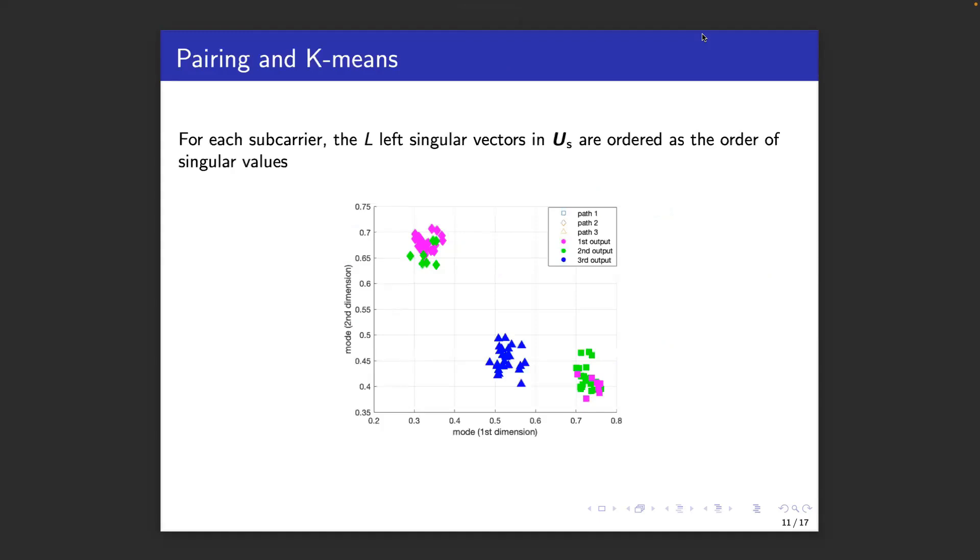This figure visualizes what happens across the subcarrier when we apply 2D Esprit. This is a scenario with three paths. The two axes in the figure show the angle of arrival and angle of departure, and the different colors represent the different estimated paths across the subcarriers. We see, for instance, the following. Path 3 is provided as a second output by 2D Esprit for all of the subcarriers. These are shown in the blue triangles. This is because of the singular value decomposition inside of 2D Esprit, the third path has the largest singular value for all of the subcarriers. So for this path, there is no problem and no reordering.